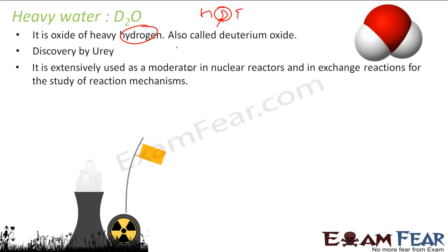It is very extensively used as moderator in nuclear reactors. You must have studied this nuclear fission and fission reaction in physics. There you have seen this D2O is used as moderator to control the speed of the particles, right, which are involved in the nuclear reactions.